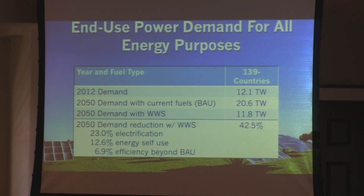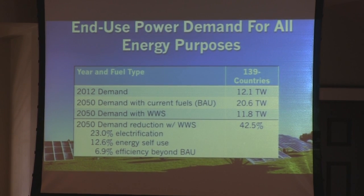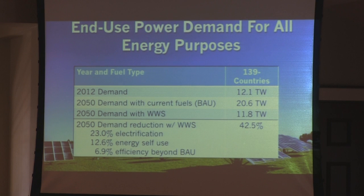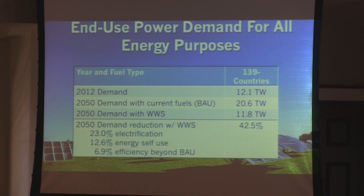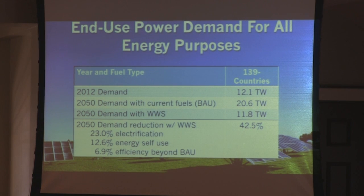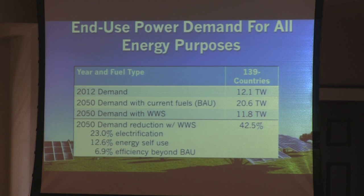The cost of driving an electric car is about 8 cents per gallon equivalent, versus gasoline at 2 to 4 dollars per gallon. If you drive an electric car for 15 years at 15,000 miles per year, you save on the order of $15,000 to $20,000 in fuel costs. You would also save 12.6% of energy worldwide because you no longer need to spend energy to mine, transport, or refine fossil fuels. Combined with efficiency improvements, you get a total of 42.5% demand reduction when you go to wind, water, and solar.